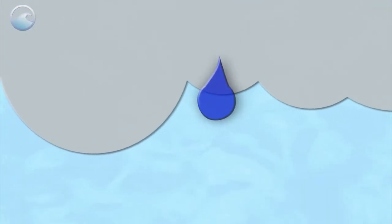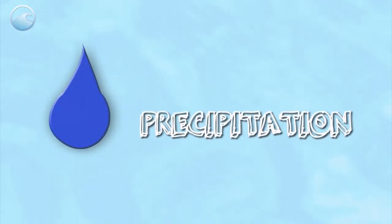Water drops form in clouds, and the drops then return to the ocean or land as precipitation.